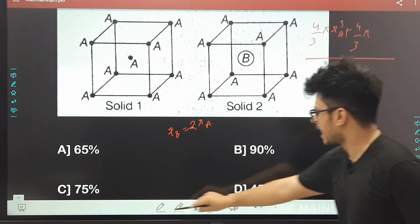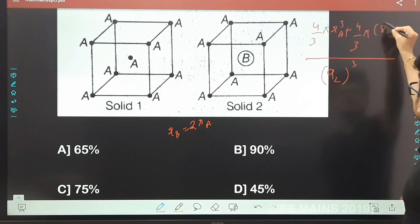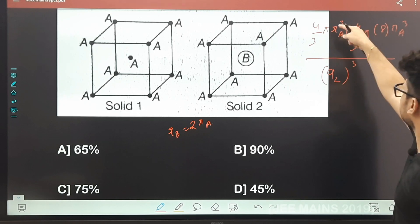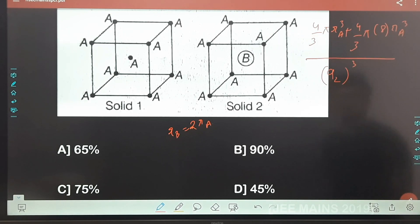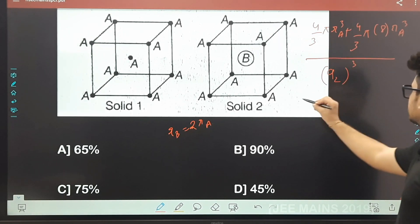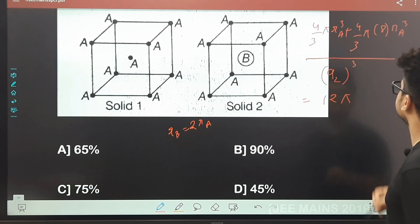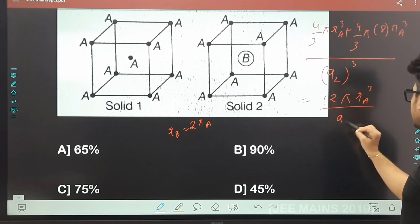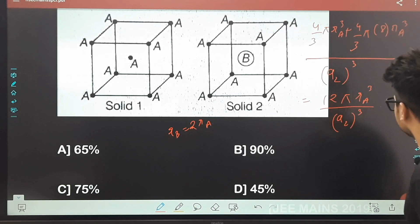I will get 8rₐ³, and this will be 32 plus 4, that is 36/3, and that will be 12π. Yes, this will be 12π rₐ³ upon a₂³ like this. Ye mujhe mil raha hai, this is packing efficiency.